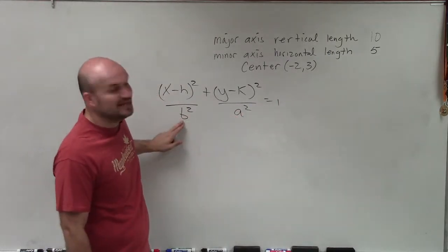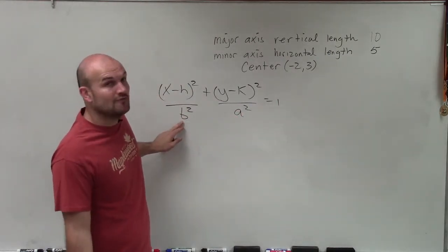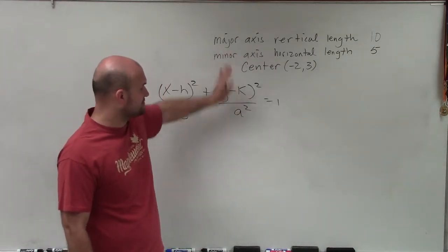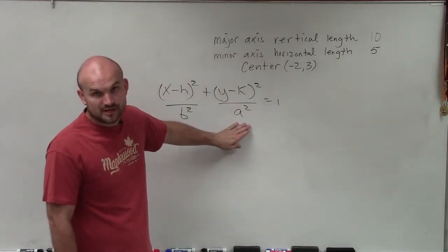That's A, and B is the distance from the center to a co-vertex. Whenever your major axis is vertical, your A is always going to be under your y squared.